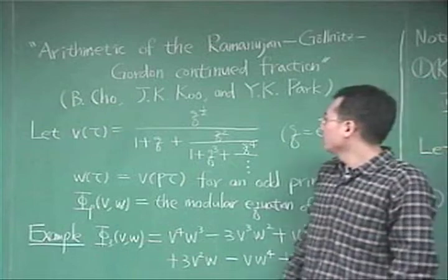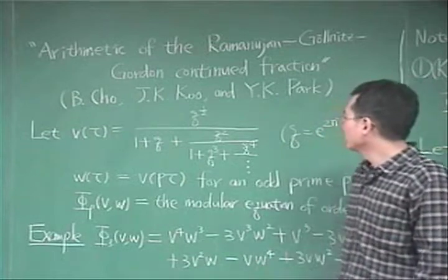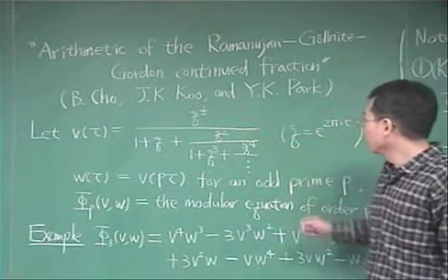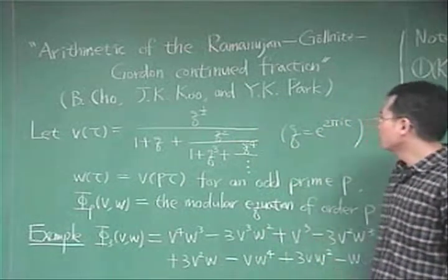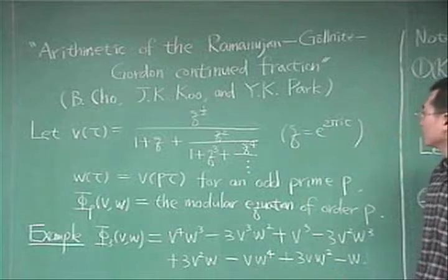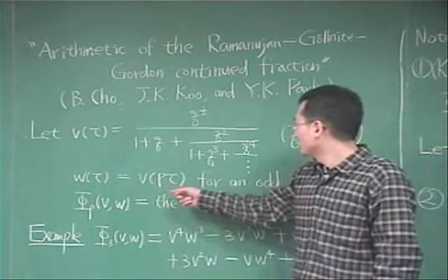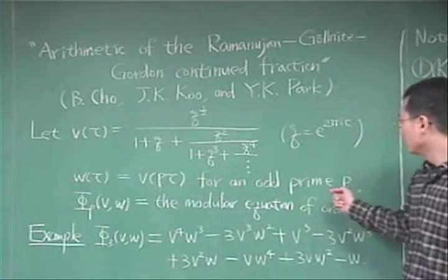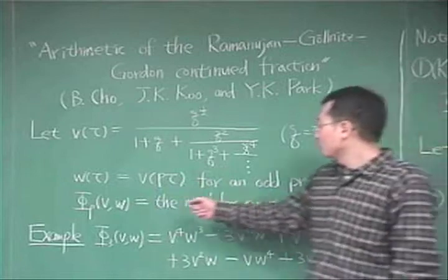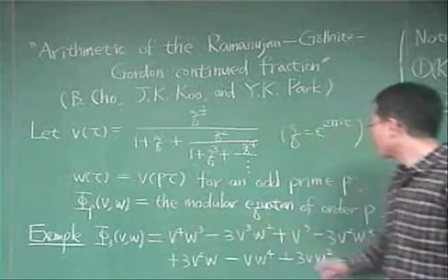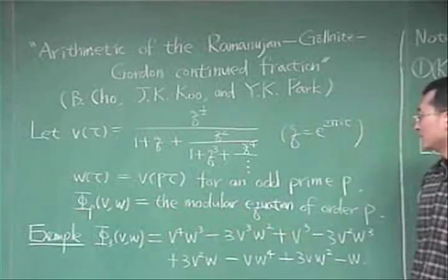Let V(τ) be the q-continued fraction defined as follows, which is called the Ramanujan-Gelbart-Gordon Continued Fraction. Let W(τ) be V(pτ) for a prime p, and let Φ_p(V, W) be the Modular Equation of order p.